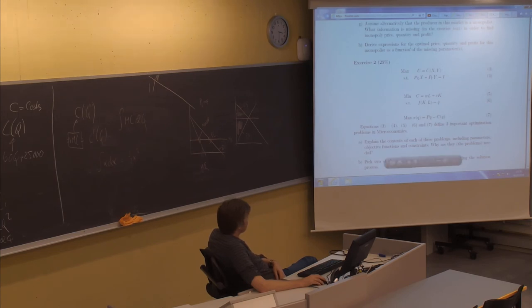So we should explain. This one is a utility maximization problem. We have a utility function here and we have it subject to a budget constraint. Then presumably p_x is the price of good x, p_y is the price of good y, and i is the budget constraint. That's the explanation of the first one.